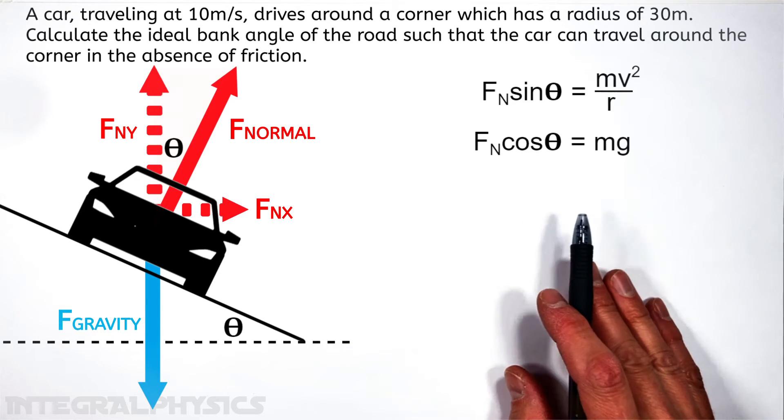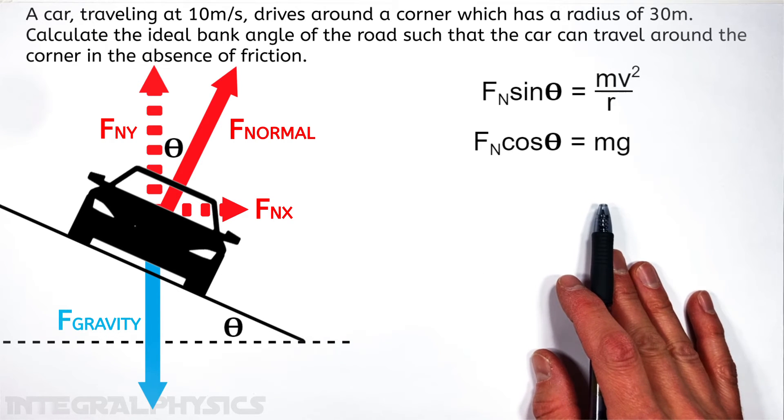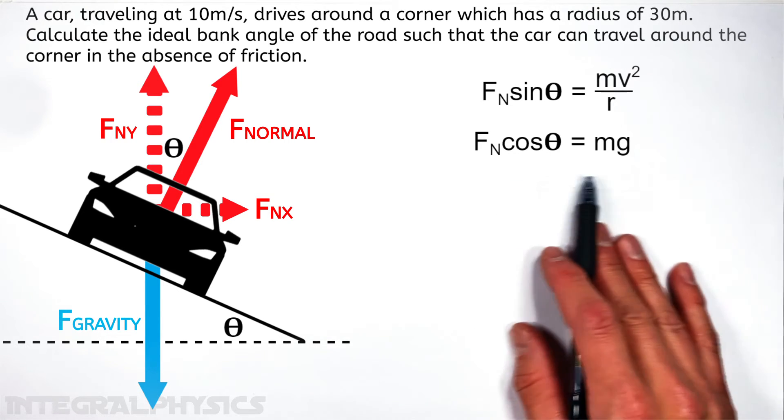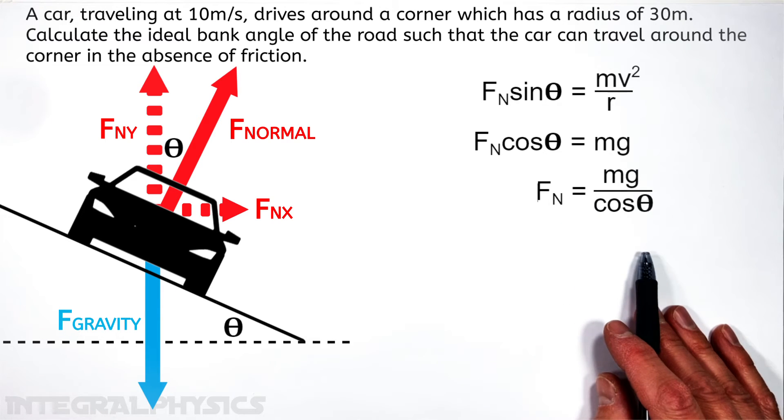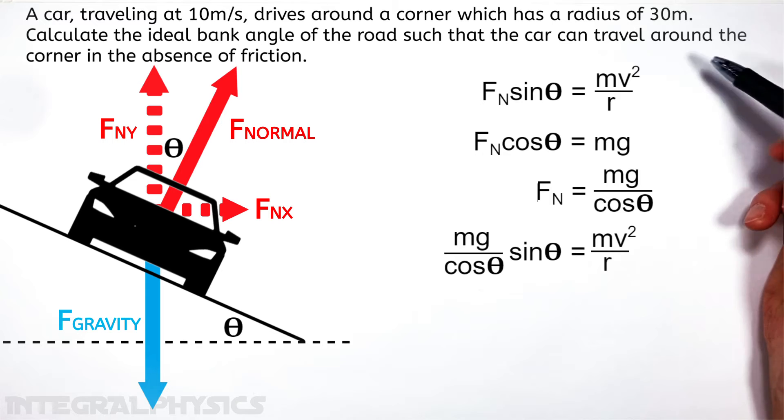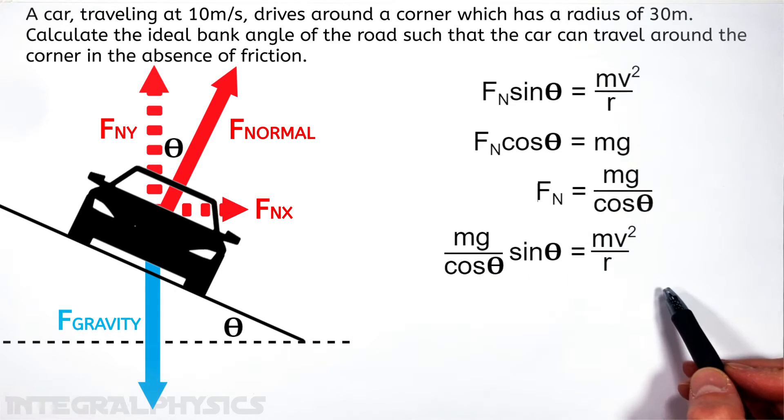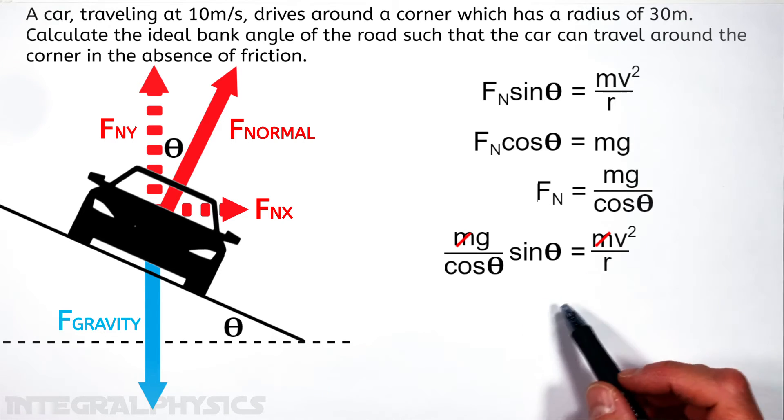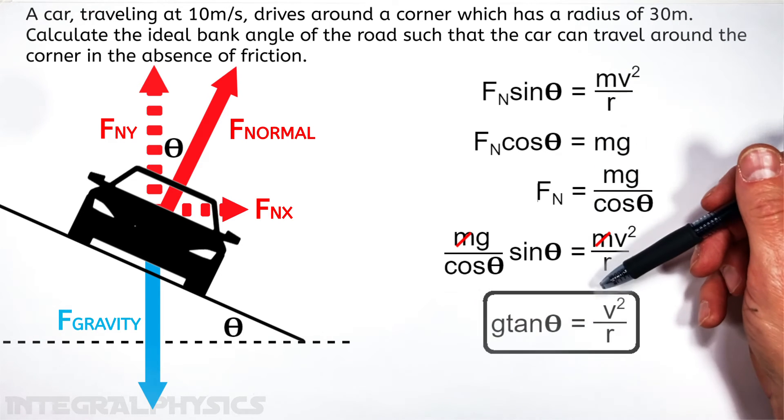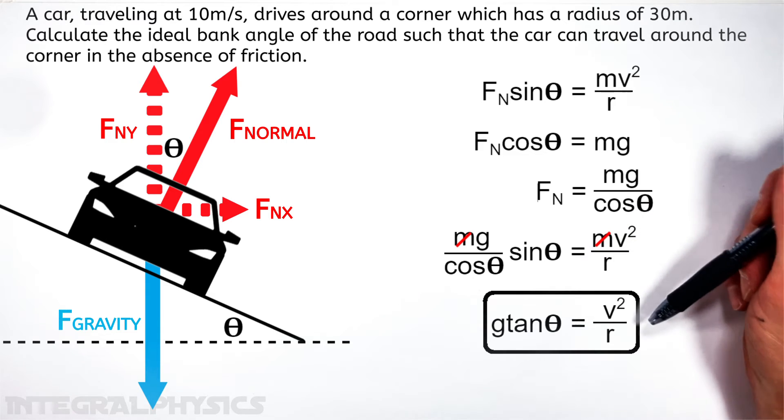And really what we have here are two equations and two unknowns, Fn and theta. So rearranging this bottom equation for Fn, and then substituting that equation into the first one, we get this function, which might look a little scary, but realize the mass of the car is on both sides of the equals sign, it's going to cancel out. And our sine and cosines can combine to be tangent, leaving us with this function, g tan theta is equal to v squared over r.